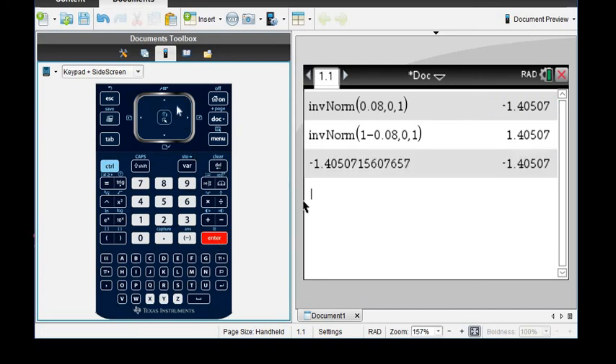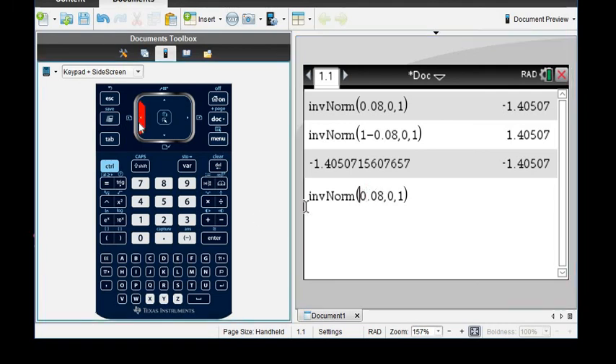What we can do is we can go up and grab, I didn't go far enough. Hold on. Let me go back up. I'm going to grab this one and then I'm going to change this to, you can either change it to one half, so 0.5 times 0.08 or you could just write it in as 0.04. And notice it gives me negative 1.75.